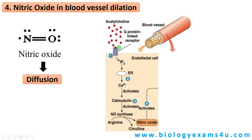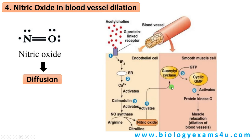Acetylcholine, which is a neurotransmitter, has a G protein-linked receptor on the endothelial cell. Acetylcholine binds to this G protein-coupled receptor on the endothelial cell surface, activates IP3, which activates the endoplasmic reticulum to release calcium ions. This release of calcium ions activates calmodulin, which activates the synthesis of nitric oxide from amino acid arginine. The synthesized nitric oxide diffuses into the smooth muscle cell, activates the enzyme guanylyl cyclase that converts GTP to GMP, which activates protein kinase G, leading to muscle relaxation or dilation of blood vessels. Nitric oxide is a major paracrine signaling molecule in the nervous system and circulatory system.